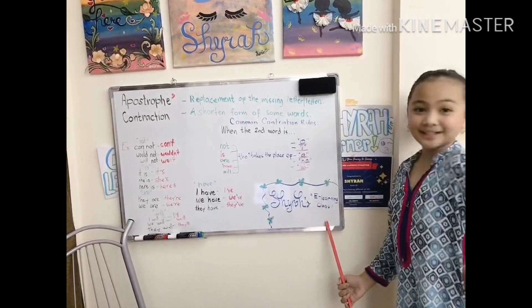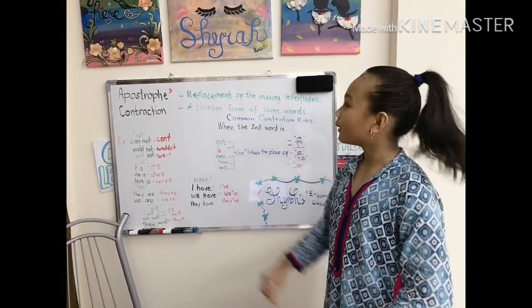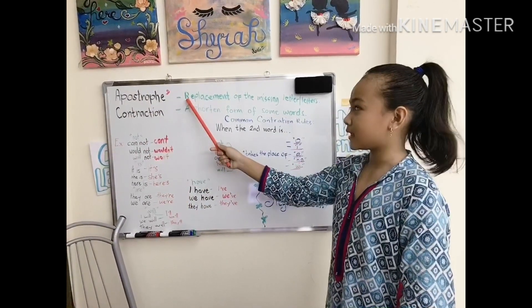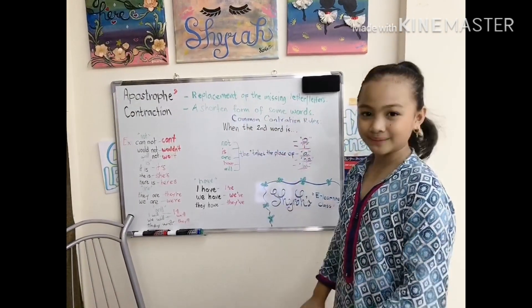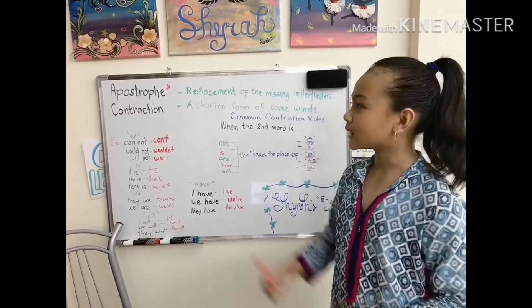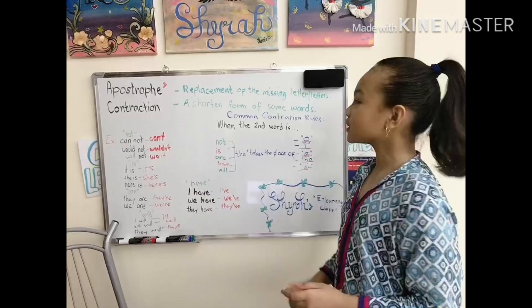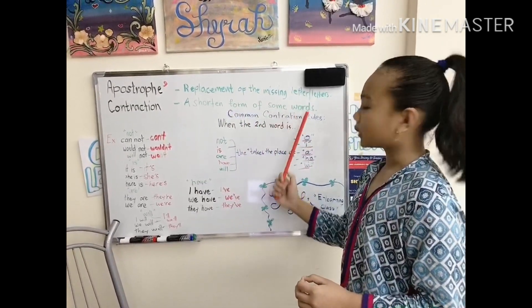Hello everyone, it's e-learning time. For today's lesson, we're going to be continuing all about apostrophe. We know that apostrophe is a replacement of the missing letter or letters. And today, we will be learning how to use an apostrophe in contraction. Contraction means a shortened form of some words.